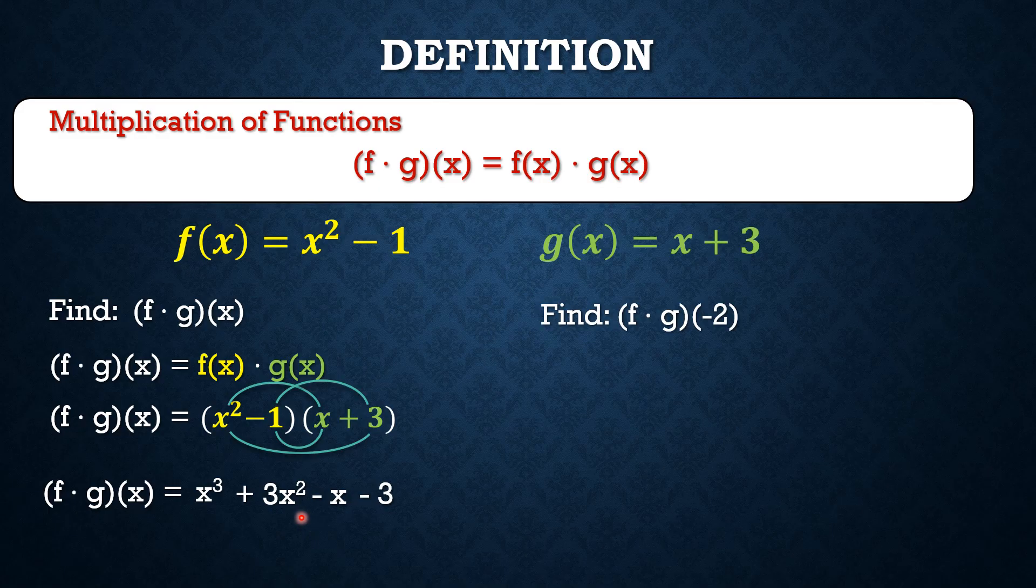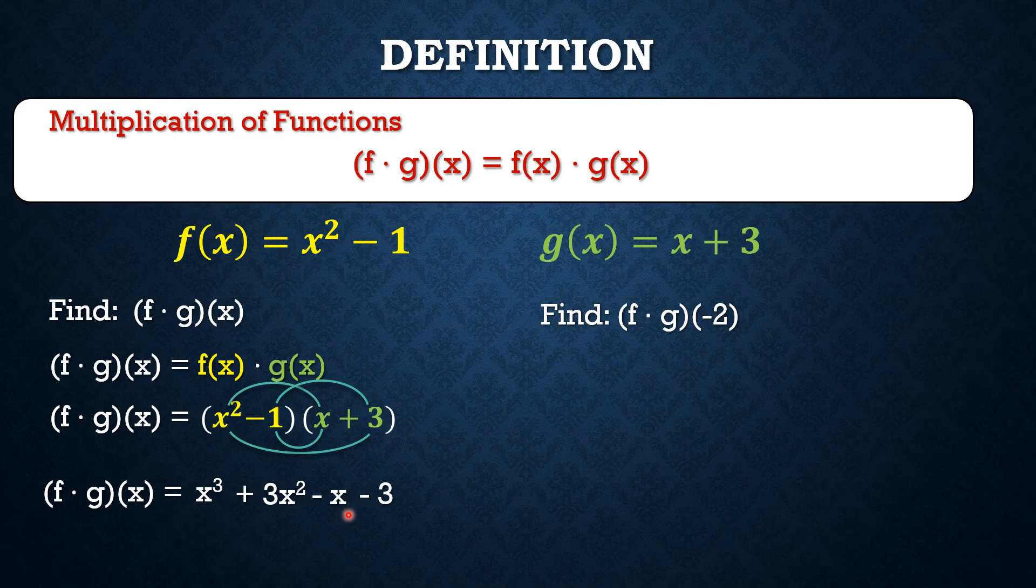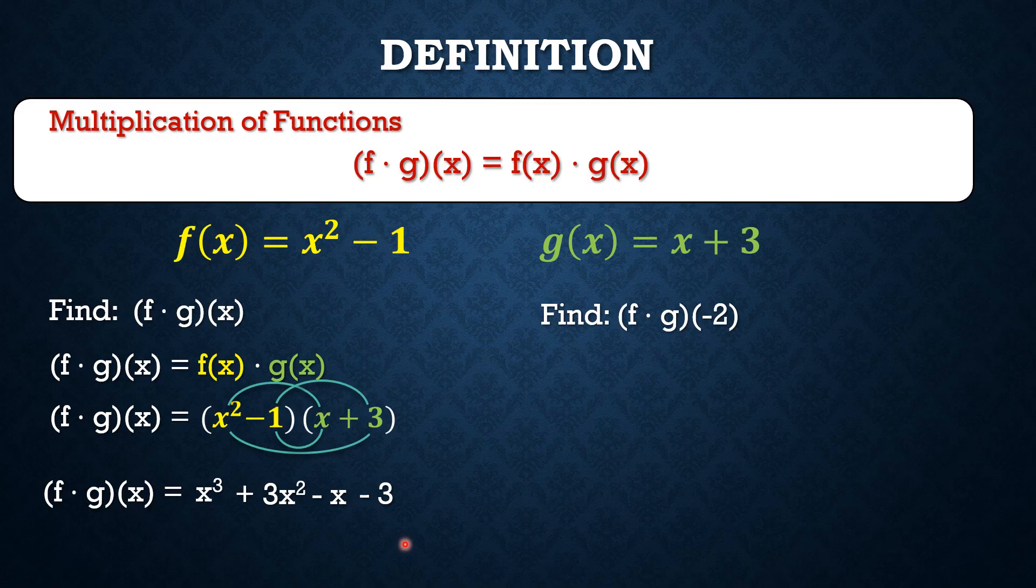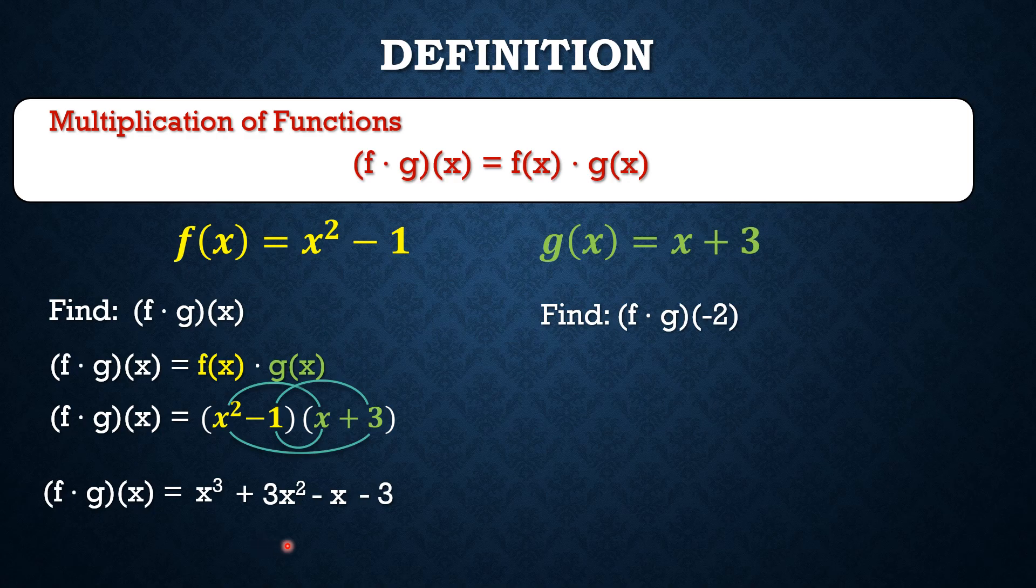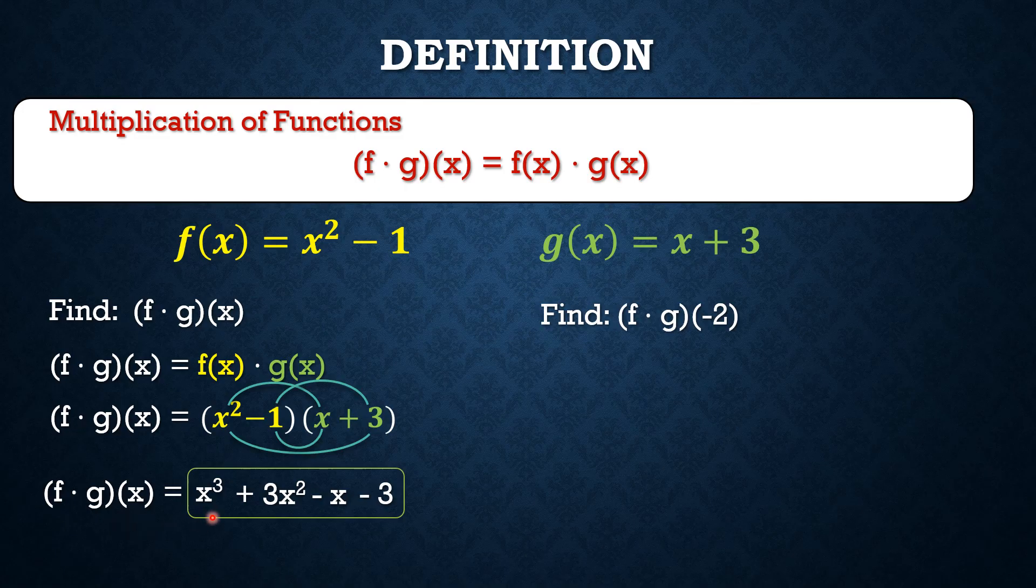If we look further, we have one second degree term. Just one, no other. We also have one first degree term. Just one. And we have one constant term. And in this case, we can see that this resulting expression on the right side of our equation is already in simplest form. And that means (f · g)(x) = x³ + 3x² - x - 3.